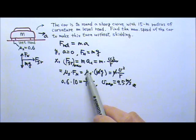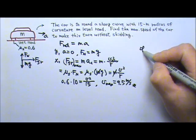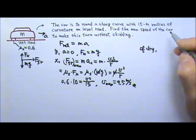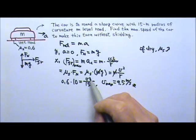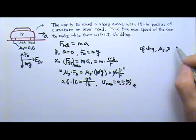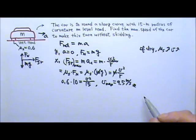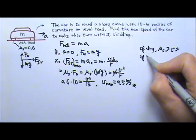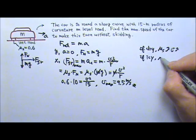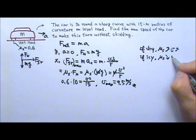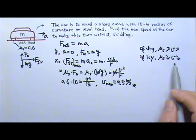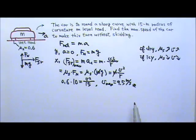If the road is dry, μs would be bigger, meaning you can have a faster speed to make that turn safely. But if the road is icy, μs will be much smaller. The smaller the μs, the smaller the v — meaning you have to really reduce your speed to make a turn.